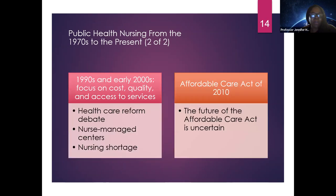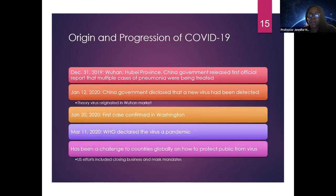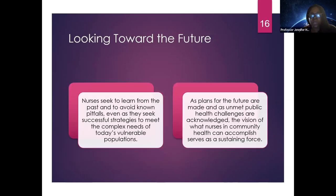The Affordable Care Act helped those who were uninsured to become insured and access the preventive health care they need to live longer. Then came COVID-19 — our cases first appeared in China, and in March 2020 it was declared a pandemic. We are still dealing with COVID today.